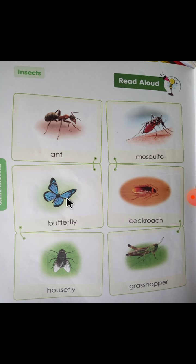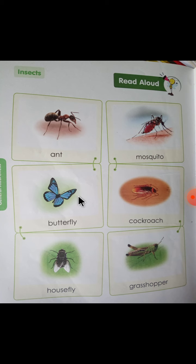Next is Butterfly. देखें, colorful रहता है Butterfly — अलग-अलग colors में आपने देखा होगा, बहुत सुंदर दिखता है। B-U-T-T-E-R-F-L-Y, Butterfly, मतलब तितली। ये flower के ऊपर बैठती है, कभी इस डाली पर, कभी उस डाली पर — पेड़ों पर और फूलों पर।